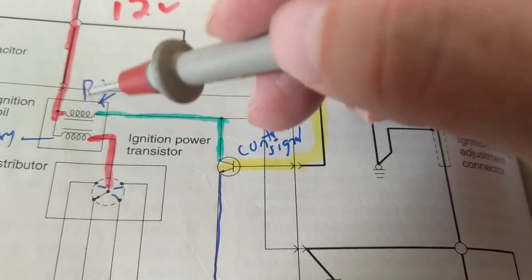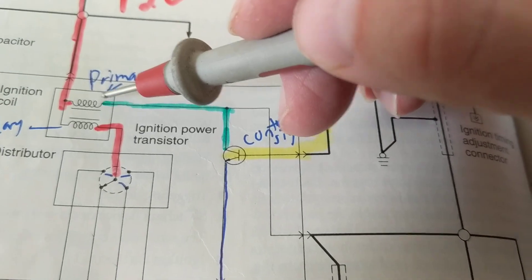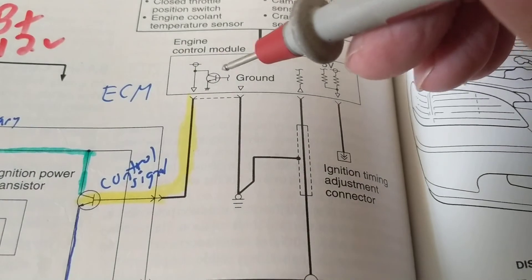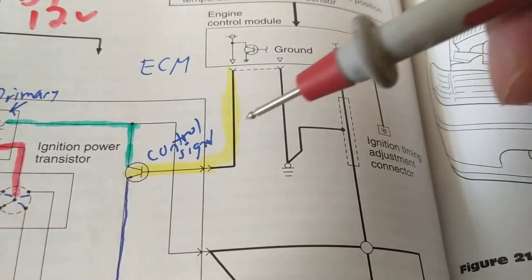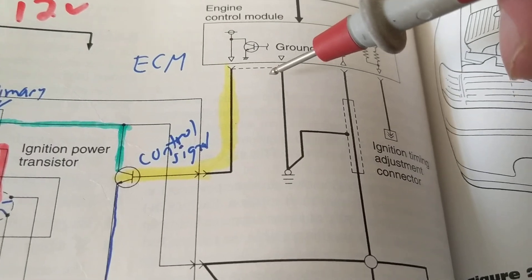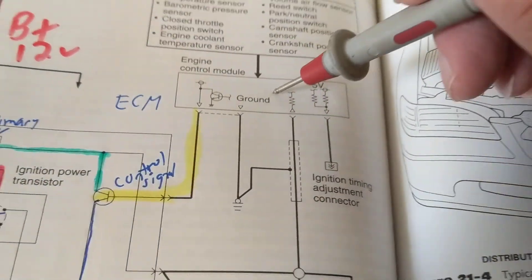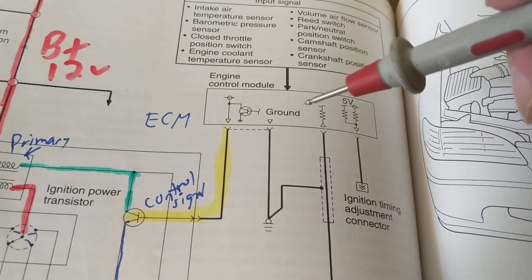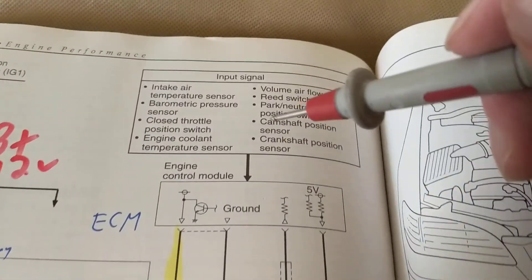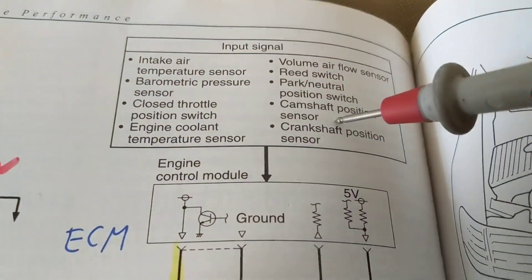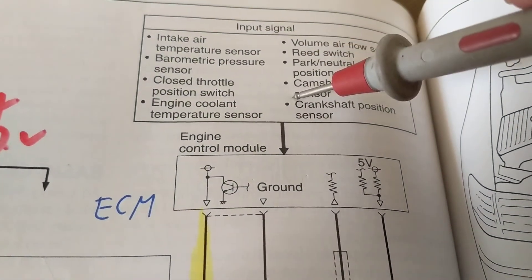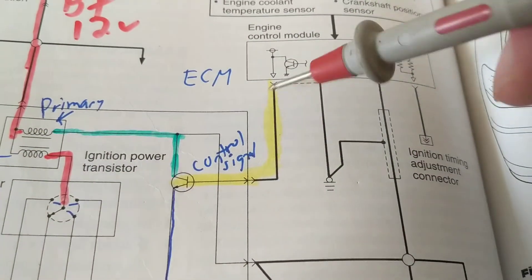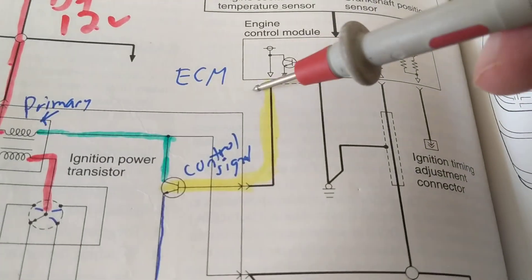When the computer decides to turn it off — like a switch being opened — the field collapses. That's what we want, because when it collapses it induces the secondary voltage. The computer is in place of the physical switch. So the computer decides when to do this — but when does the computer know when? It uses input signals. Remember there are input signals to a computer and there are outputs.